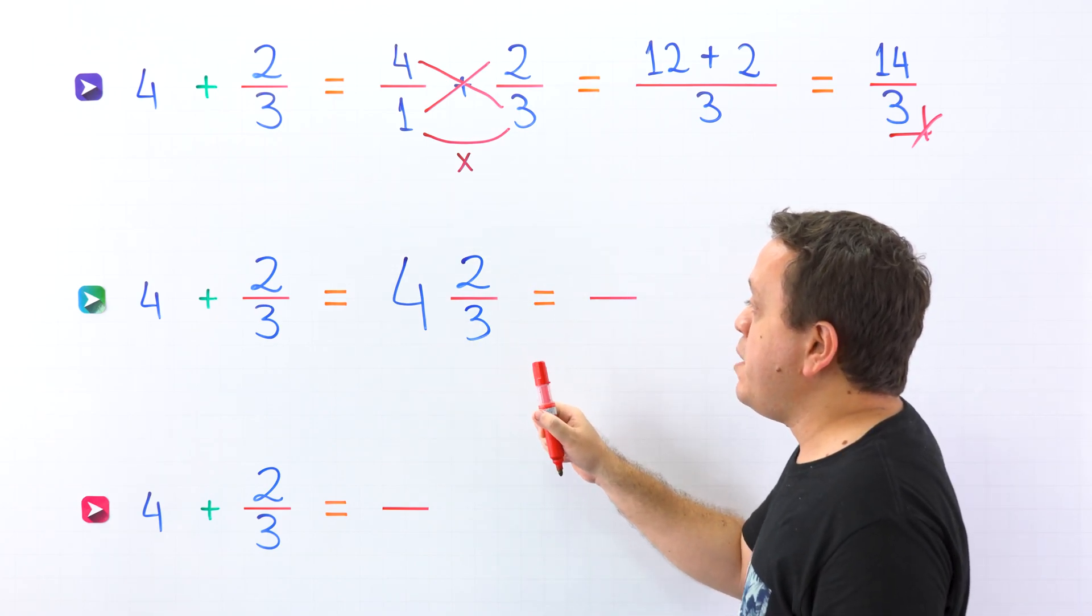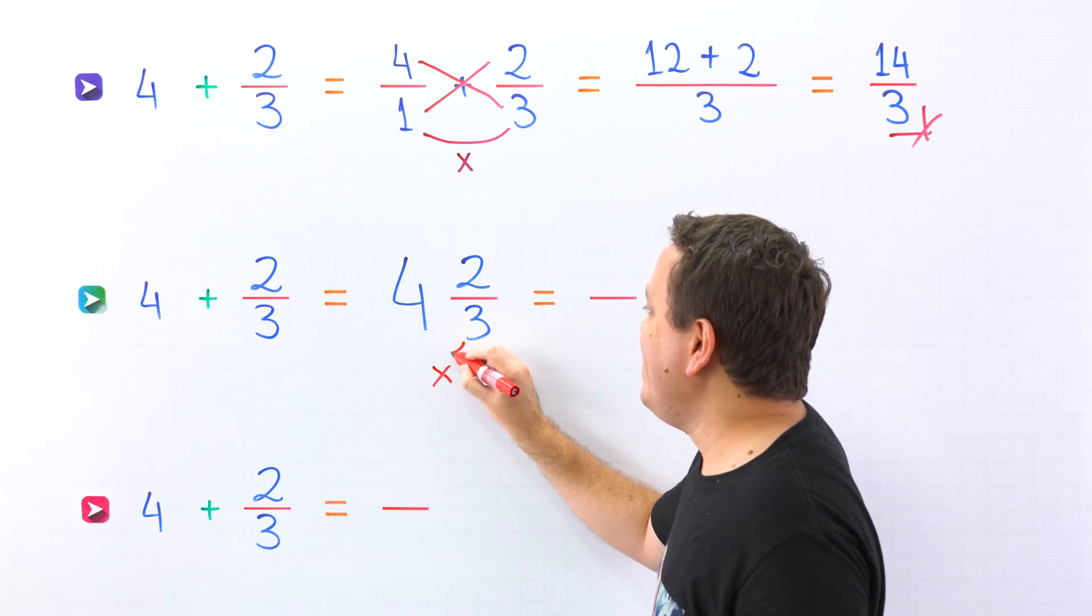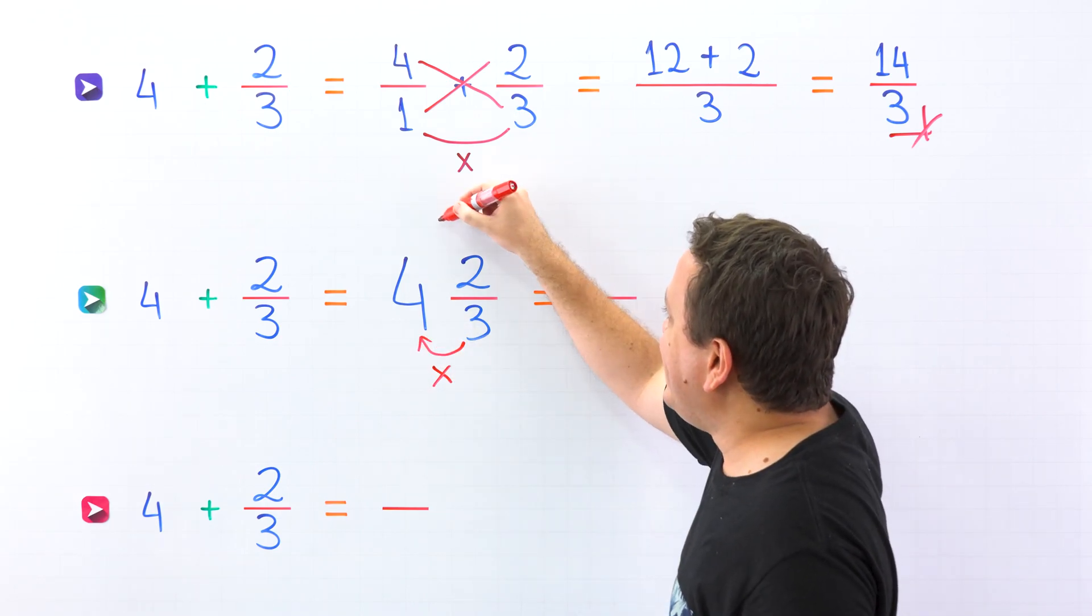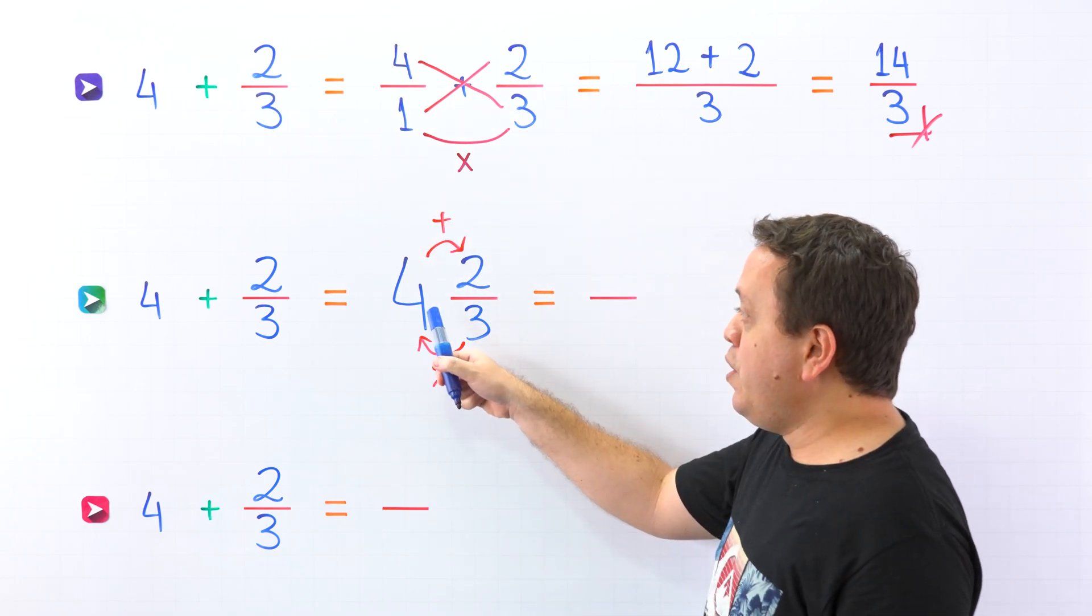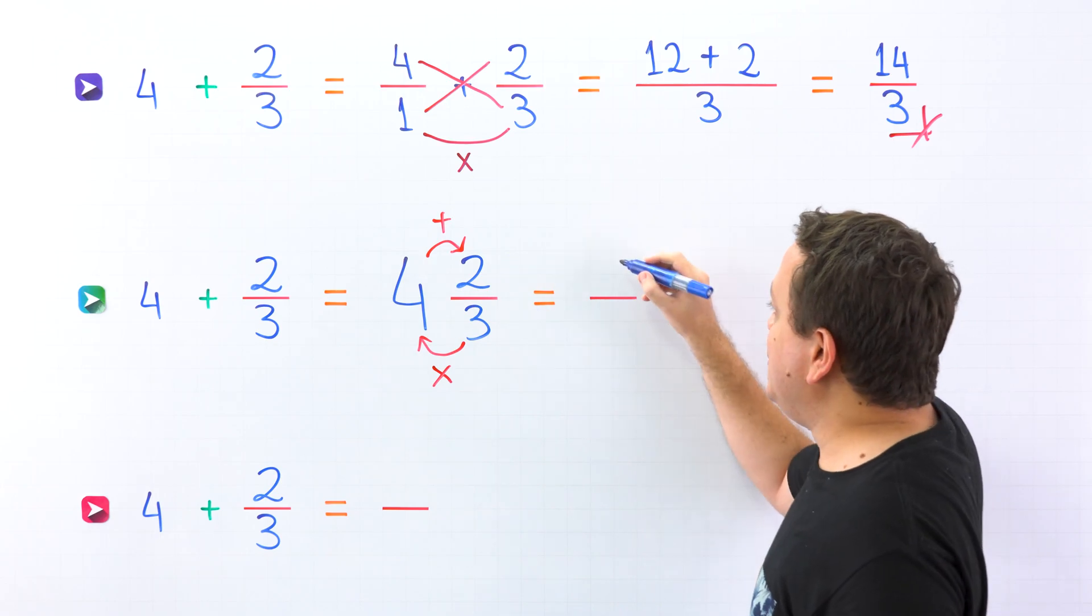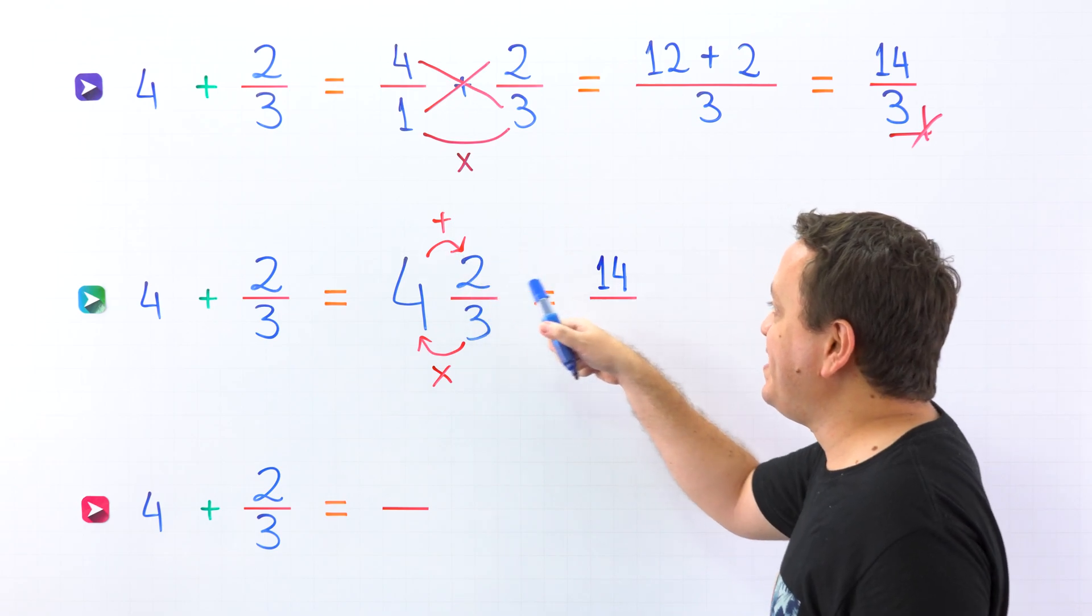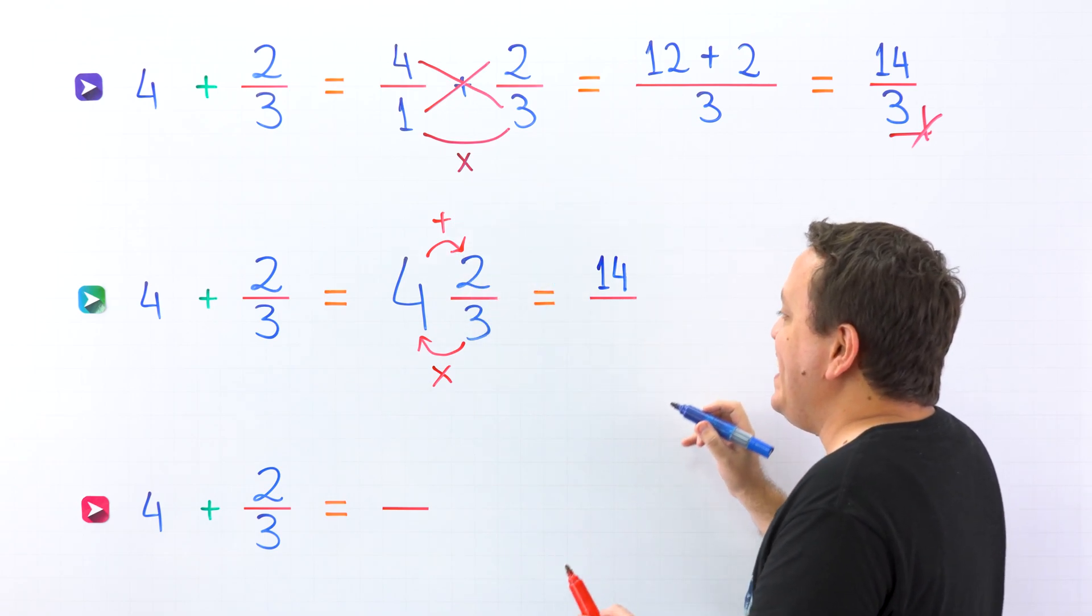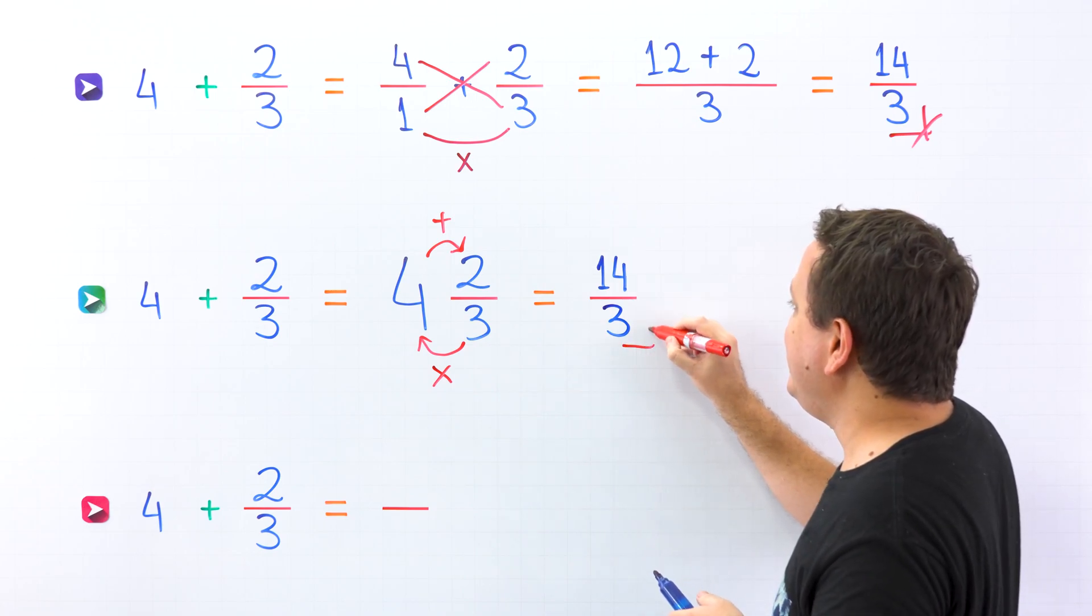Finally, we're going to rewrite this mixed number as an improper fraction. So first, we multiply the denominator by the whole number, then we add this result to the numerator. Ready? 3 times 4 is 12 plus 2, give us 14. One more time, 3 times 4 is 12 plus 2, give us 14. Finally, the denominator stays the same, so the answer is 14 thirds.